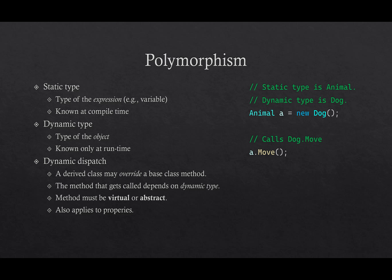This idea of having base types and derived types and having the behavior depend on what the actual derived type is, is called polymorphism — a concept borrowed from biology that literally means 'many shapes.' There's one kind of interface defined by the base class animal, but what it actually does can vary depending on the derived type. So there are many kinds of animals — many shapes of animals.